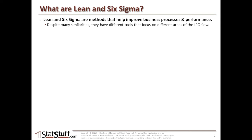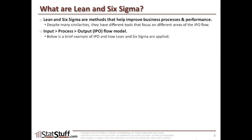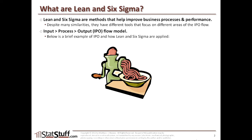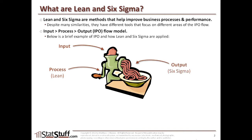So what do I mean by the IPO flow model? I'm referring to the input, process, output flow model. Let me give you an illustration using the example of a meat grinder. You have some sort of input — the meat — that goes into the grinder itself. Then you turn the crank, which is like applying a process to those inputs. And by applying that process, it creates some different or unique output coming out of the process.